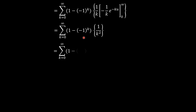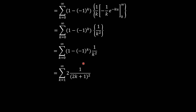When k is even, (1 minus (negative 1)^k) equals 0, so those terms vanish. When k is odd, the factor becomes 2. We are therefore left with 2 times 1/(2k plus 1) squared, summed over non-negative integers k — only the odd denominators contribute. We can pull the 2 out, leaving the summation of 1 over (2k plus 1) squared.